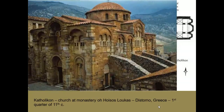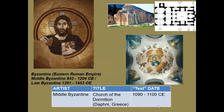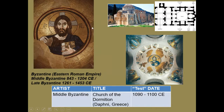We see churches of different configurations being built throughout the Eastern Empire. The Church of the Dormition in Greece, from the first quarter of the 11th century, is one to recognize — particularly its interior. It forms essentially a cross shape surmounted by a dome. In the middle of the 11th century, the dome decoration clearly shows the older bearded Christ with a halo. The initials beside him are the first and last letters of the names Jesus and Christ in the Greek alphabet, identifying him both by visual image and by symbolic lettering.